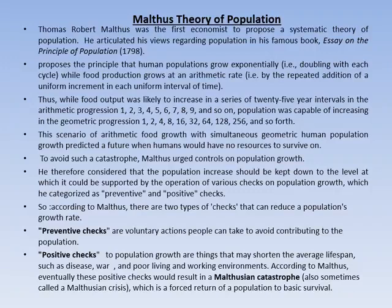He was concerned about the increasing growth rate of population on one side, and on the other side, how food is increasing. Food is increasing in a stable, fixed way called arithmetic progression — it increases 1, 2, 3, 4. But the problem is that population is also increasing, but in a doubling way called geometric progression: 1, 2, 4, 8, 16. This is the core assumption of Malthus's theory.